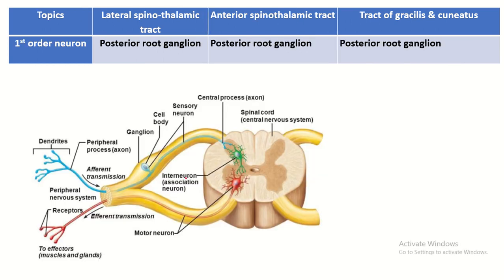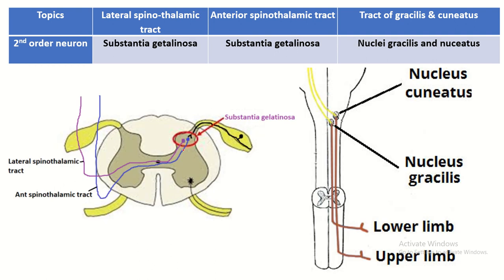The sensory information is carried by three sets of neurons: first order, second order, and third order. The location of the first order neuron is within the posterior root ganglia and it is a pseudo-unipolar neuron. It has one process which is divided into a peripheral process and a central process. The terminal end of the peripheral process is converted into a receptor — the free nerve ending — then the peripheral process, then the central process. The central process synapses with the second order neuron.